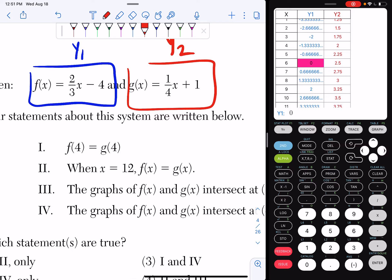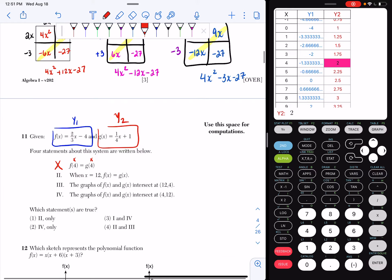So if I look, Roman numeral 1 says f of 4 is equal to g of 4. So those are my x values. So if I plug in 4, I get negative 1.3 repeating, and then I get 2. Those are not the same numbers, so I can't say 1 is true.